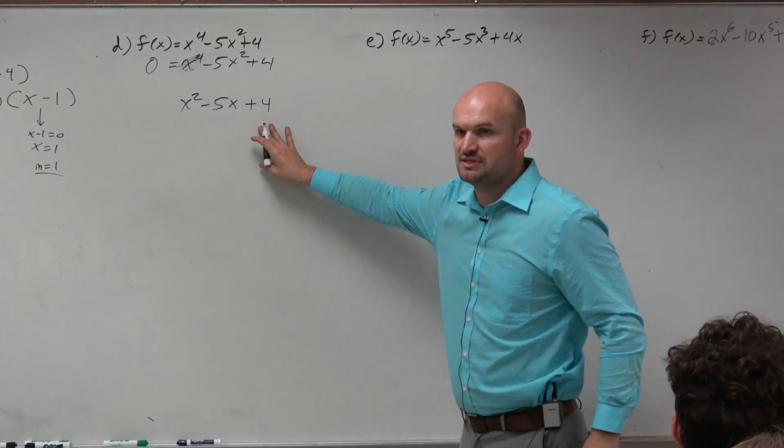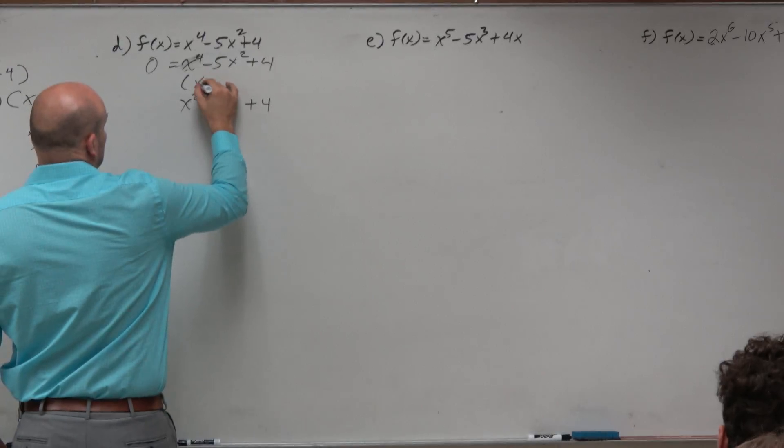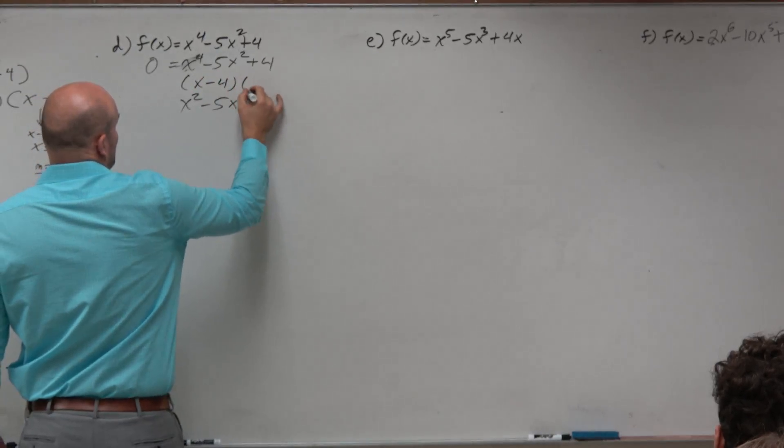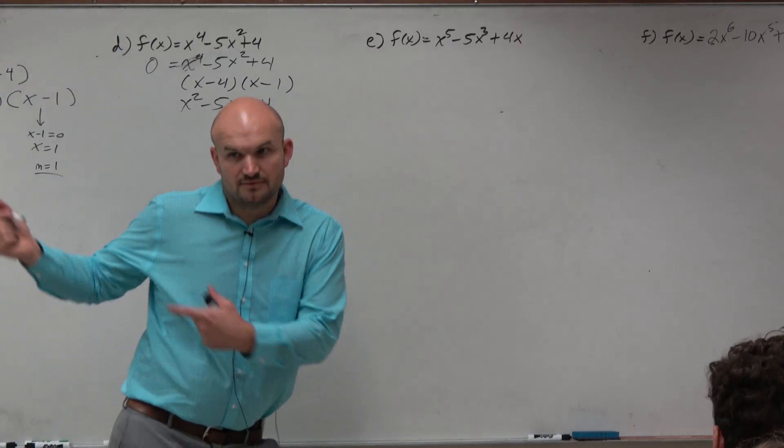And let's just try to factor it the way that we know how. And we say, oh, OK, well, this is two numbers, multiply to give you 4, add to give you negative 5, and I'm going to write the factors above. So that would be x minus 4 times x minus 1. Do you guys agree, right? Already have the answer up there? OK.